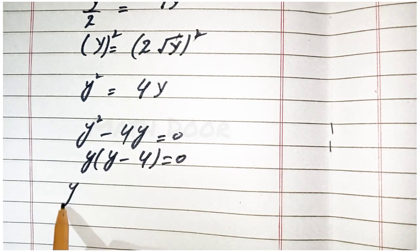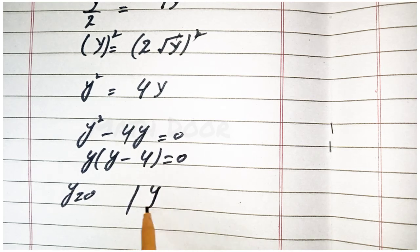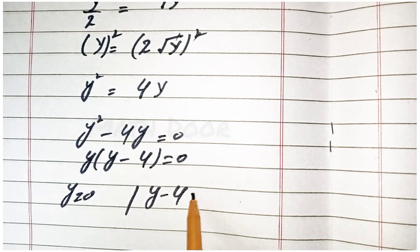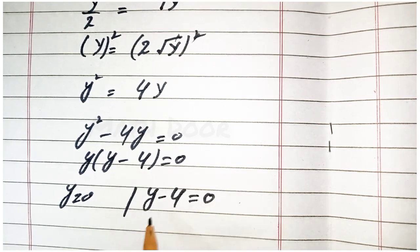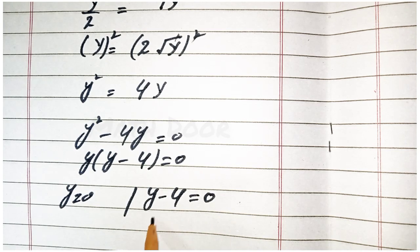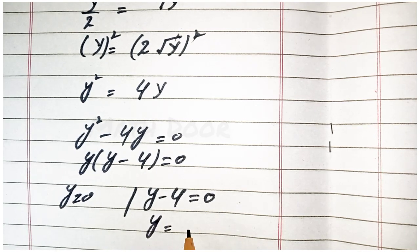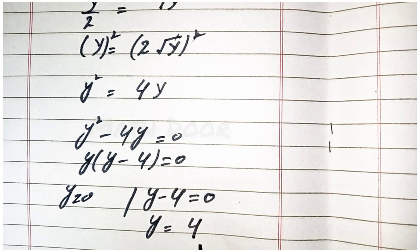We write this one y is equal to 0 and y minus 4 is equal to 0. Now, we take this 4 into the left side of the equation, this becomes positive 4.